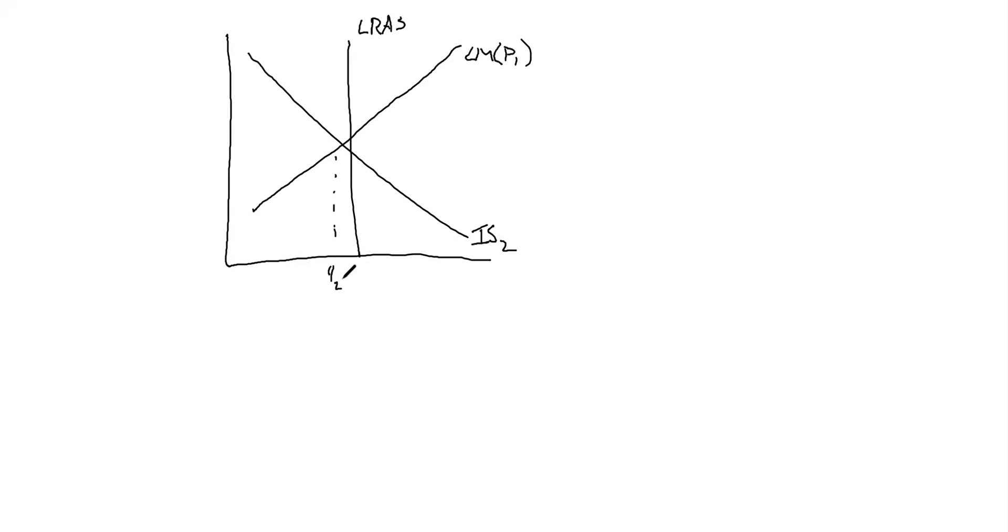Basically, that LM curve is going to have to shift to the right. When price levels fall, that increases the purchasing power of people's money. Basically with lower price levels, money can go further. And so that shifts us to this new LM curve at LM of price level 2.